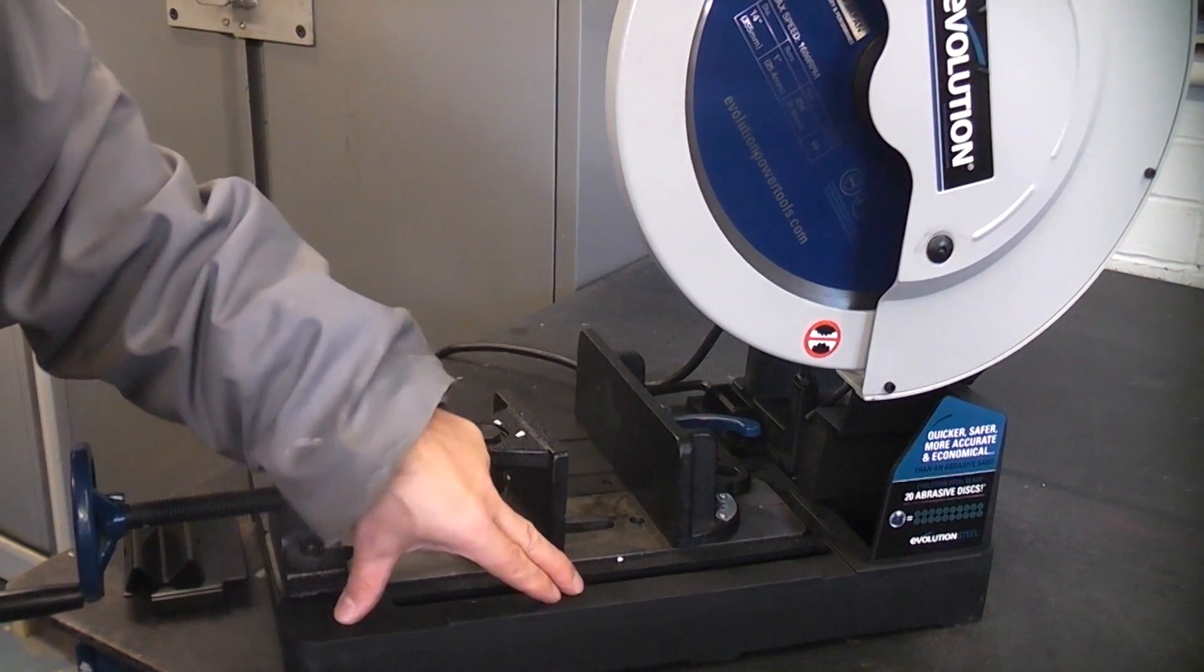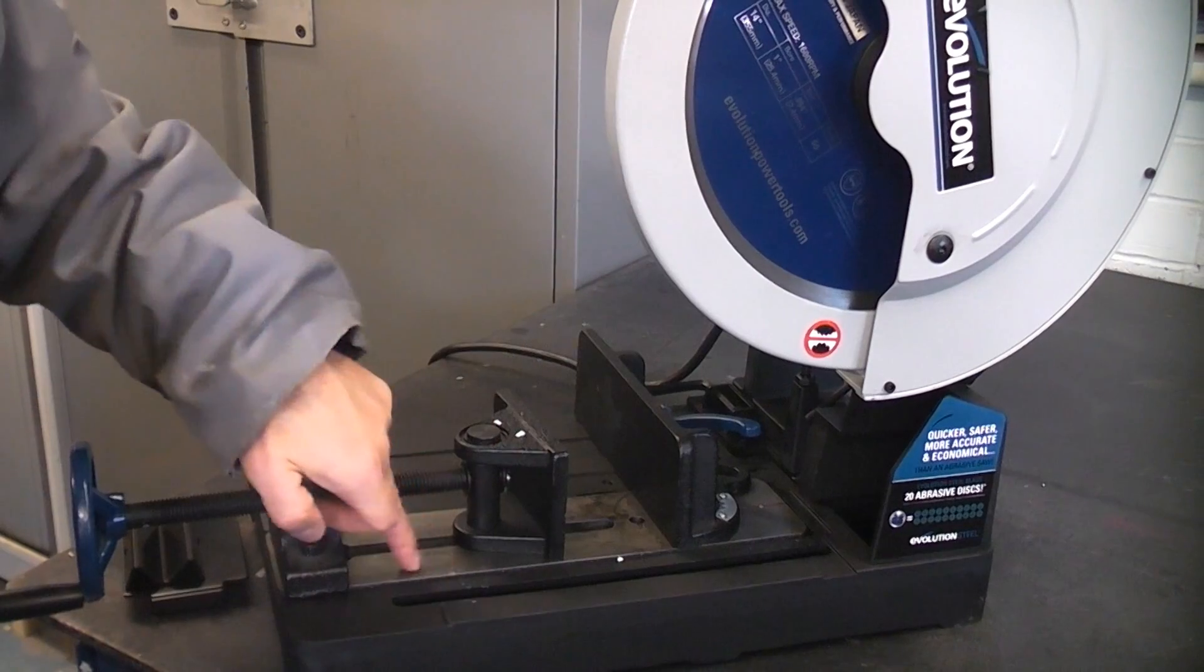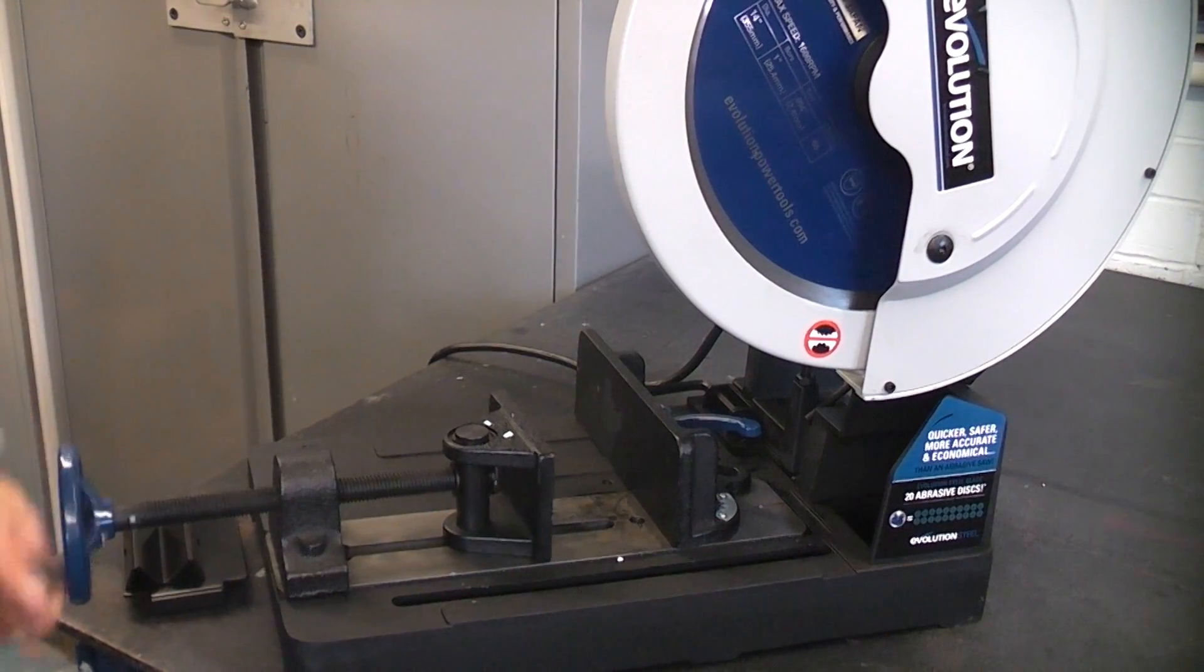The base on this machine is cast iron. As you can see it has been machined there for the clamp to run on.